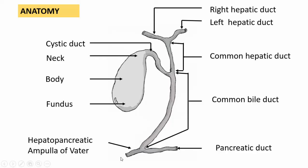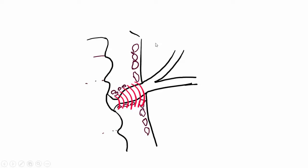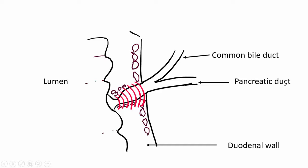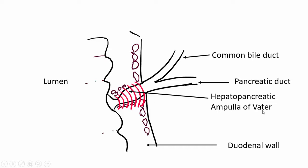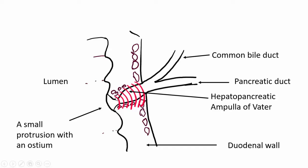The hepato-pancreatic ampulla of Vater enters the second part of the duodenum. Within the duodenal wall, the common bile duct and the pancreatic duct form the hepato-pancreatic ampulla, which opens in the second part of the duodenum with a small protrusion containing an ostium through which bile enters the duodenal lumen. This intra-duodenal ampulla is surrounded by delicate smooth muscle fibers derived from the common bile duct itself, referred to as the sphincter of Oddi, which regulates the flow of bile into the duodenal lumen.